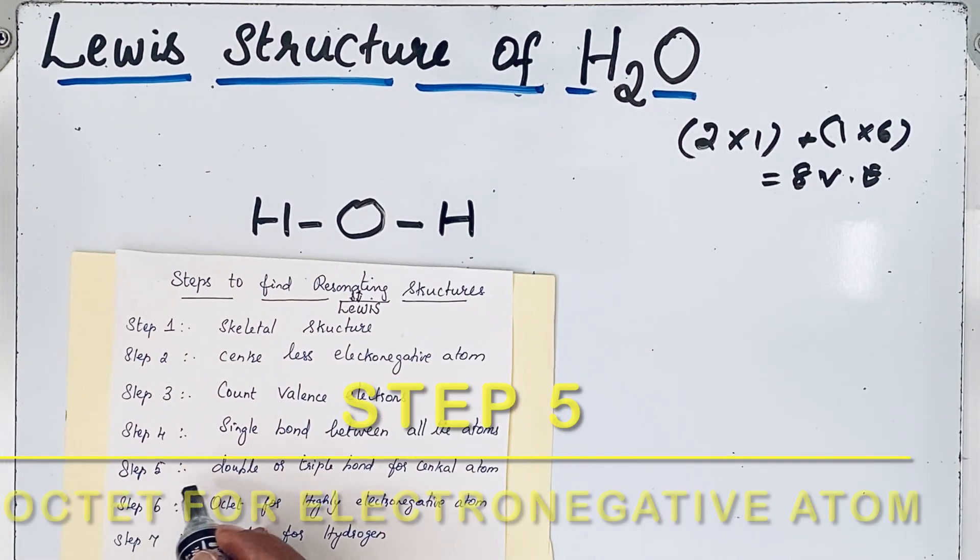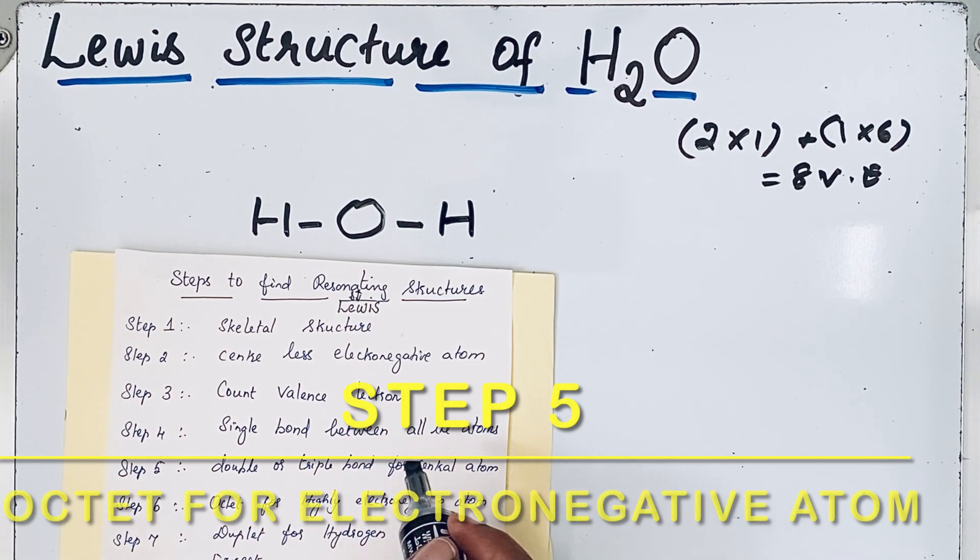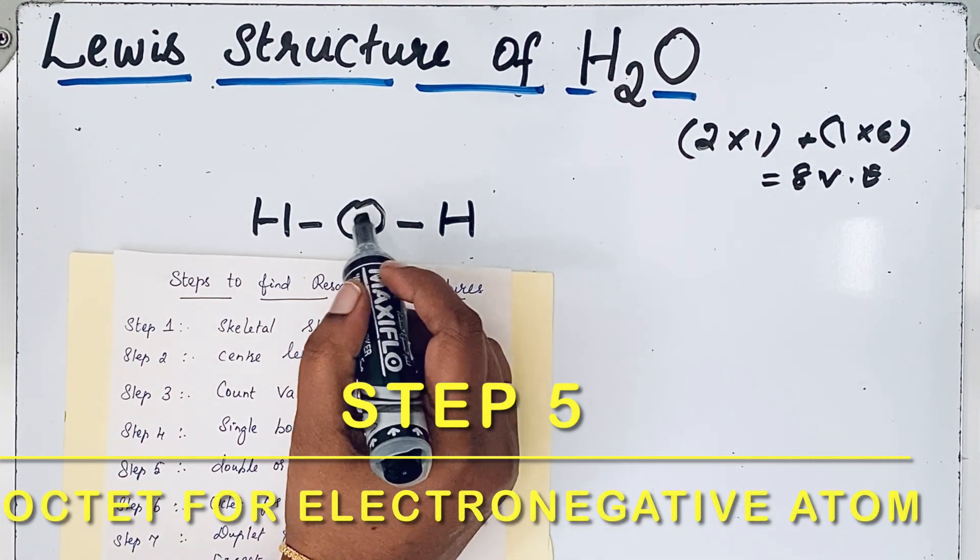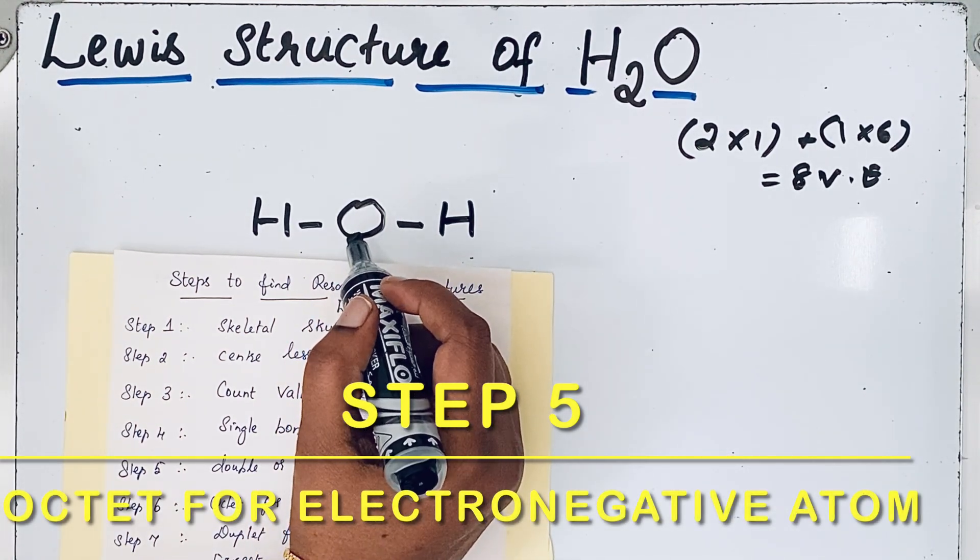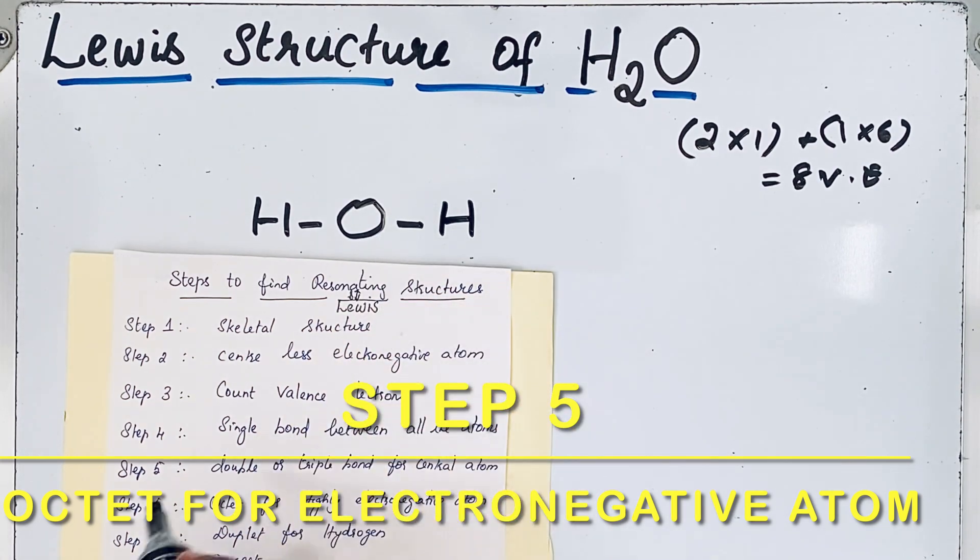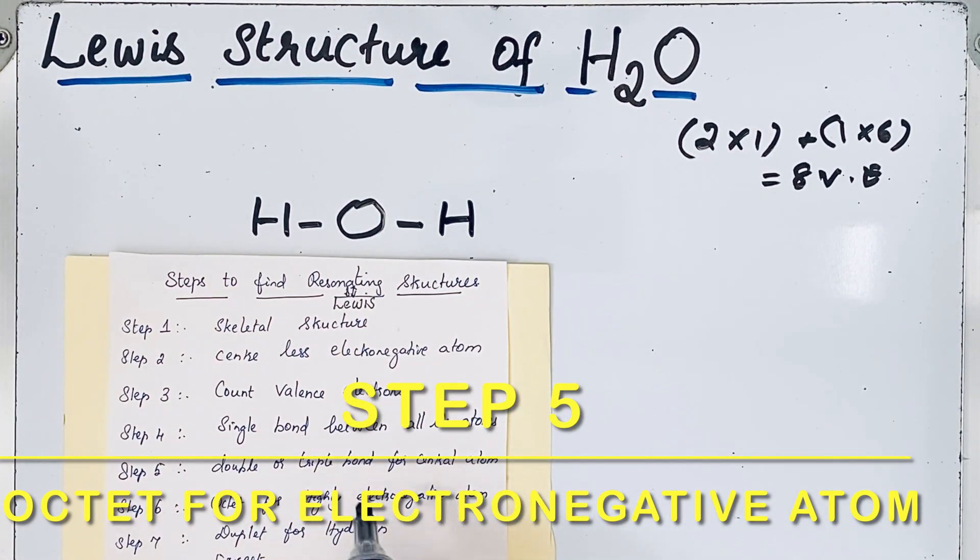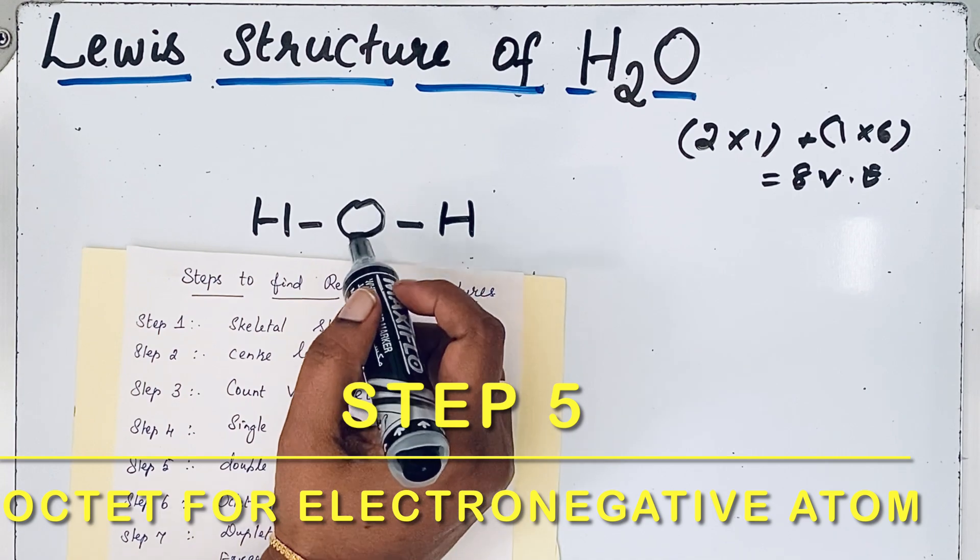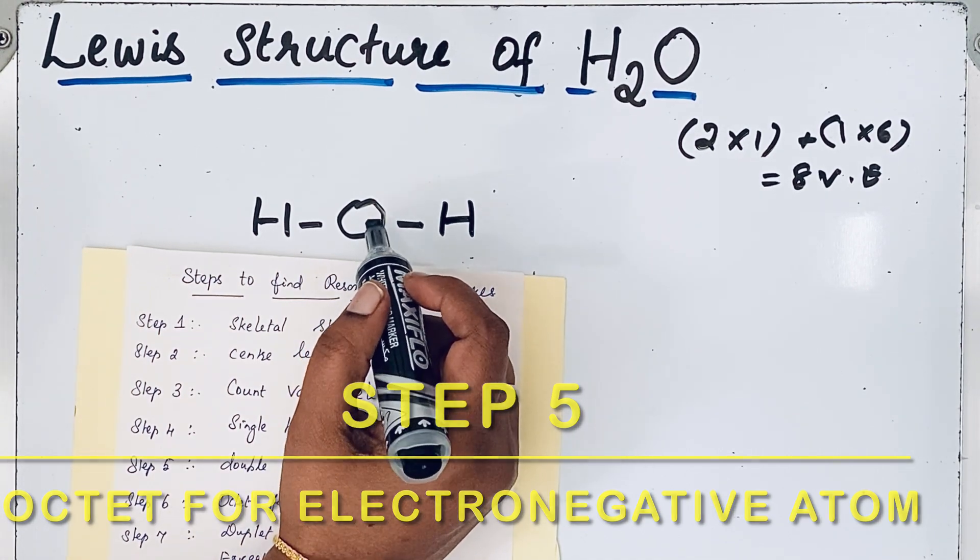Step five: add double or triple bonds for the central atom. We add double or triple bonds to complete the octet. Step six: ensure octet for highly electronegative atoms. Oxygen is a highly electronegative atom, so it should have an octet.